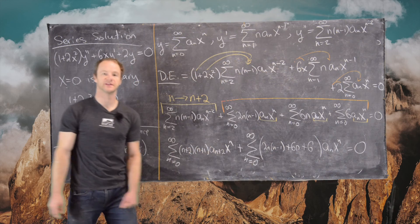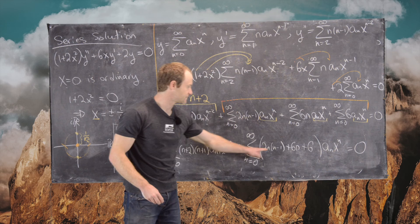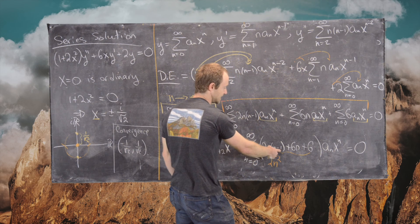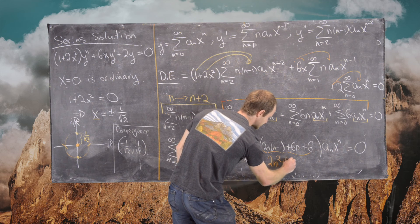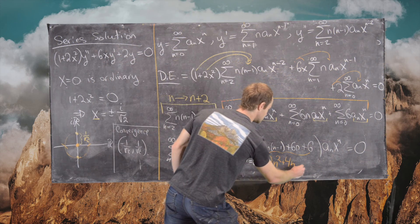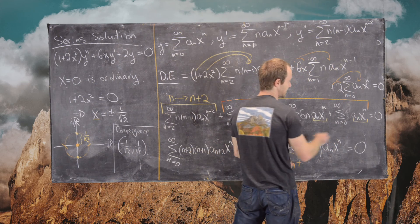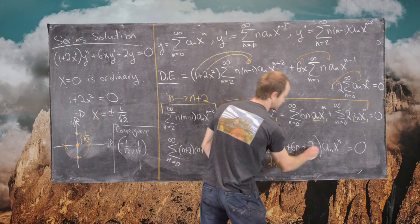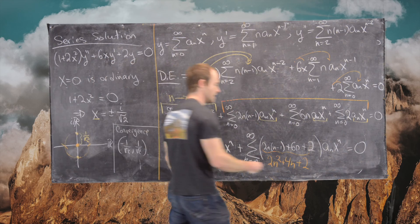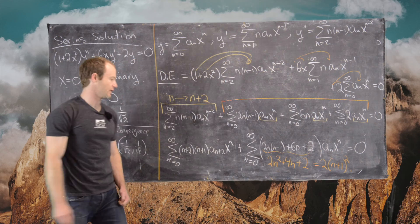Setting this equal to zero (since we want a solution to the ODE), and simplifying the coefficient: 2n(n minus 1) plus 6n plus 2 equals 2n squared plus 4n plus 2, which factors as 2(n plus 1) squared. Note: an earlier transcription error had a 6 where a 2 belongs — the correct constant term is 2, giving 2(n plus 1) squared.